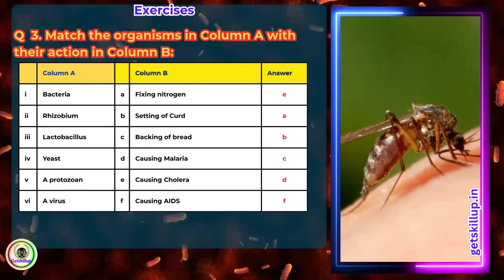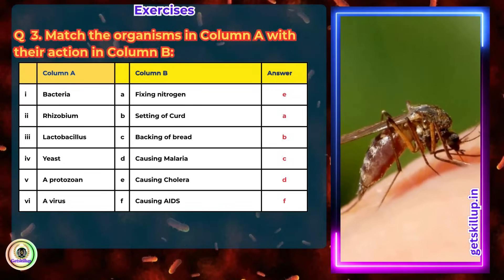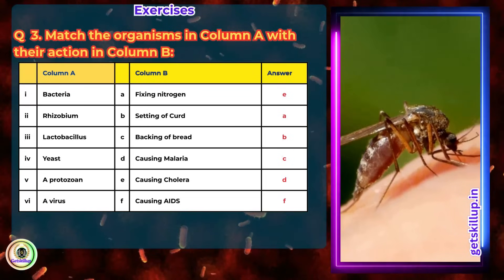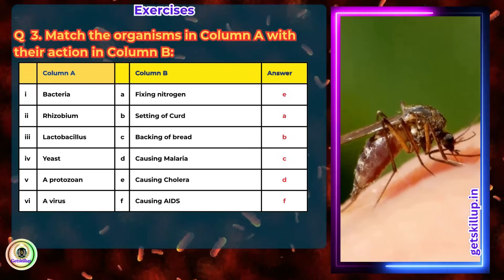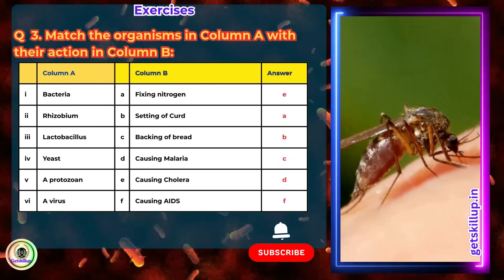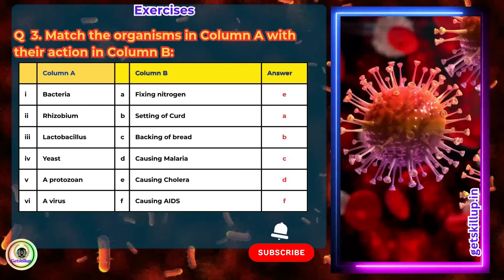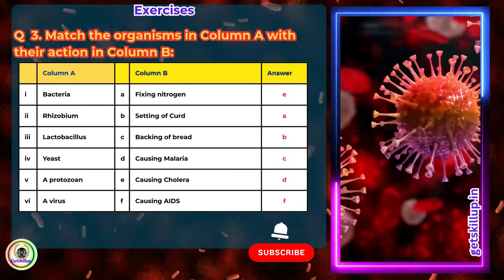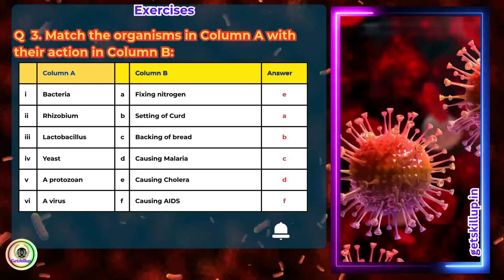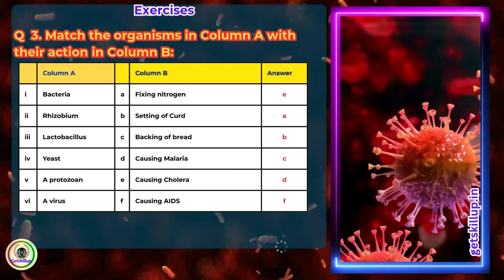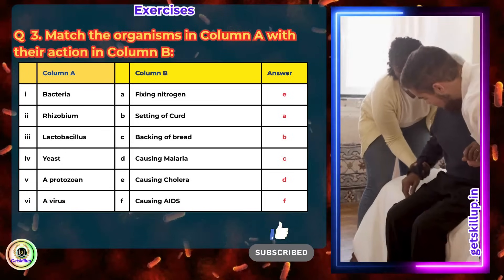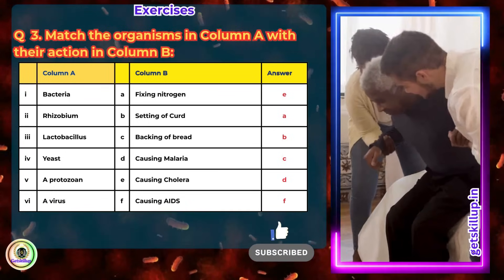Protozoan — correct match: causing malaria. Plasmodium, a protozoan, causes malaria and is transmitted by the female Anopheles mosquito. Virus — correct match: causing AIDS. AIDS is caused by the HIV virus.